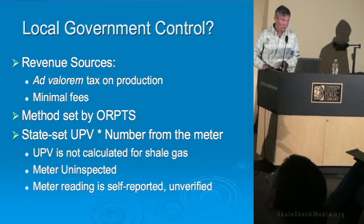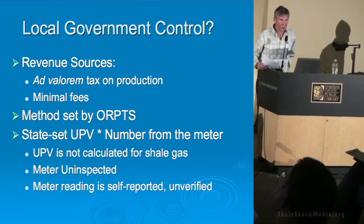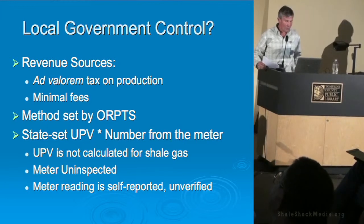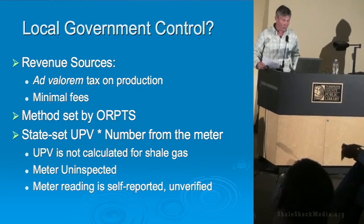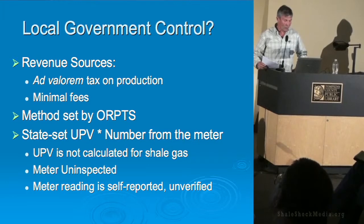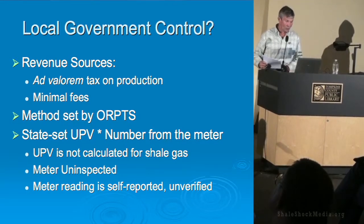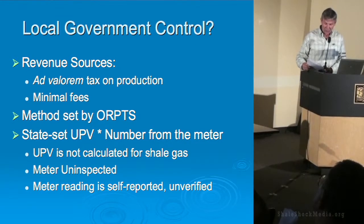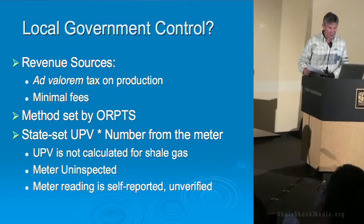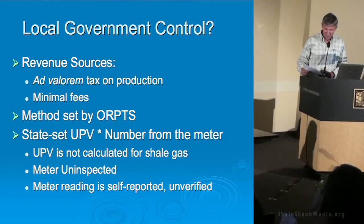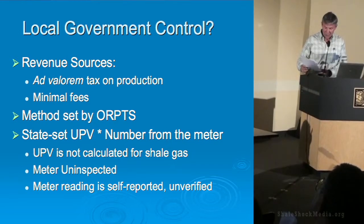What does local government control? From the Environmental Conservation Law, local governments have control over tax revenue from ad valorem. At this point in time, local governments have two revenue sources from gas. One is the ad valorem tax. The other is any fees they would charge for ancillary activities associated. The DEC is the one charging the main fee for the gas wells and the gas permit. It turns out that the state does not have ad valorem.